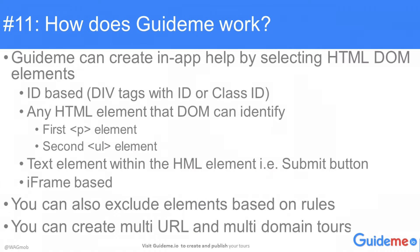So how does GuideMe work? GuideMe can create app help by selecting HTML DOM elements: ID-based, div tags with ID or class ID, any HTML element that the DOM can identify, first P element, second UL element, or a text element within the HTML element. You can also exclude elements based on rules.